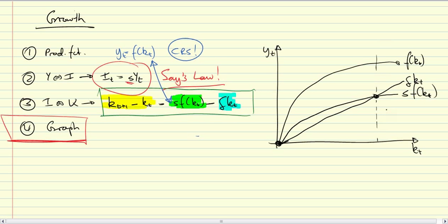At this point now, how can we characterize this point? At this point, let's call it k star. At the point k star, we know that S of f of kt is equal to delta kt.